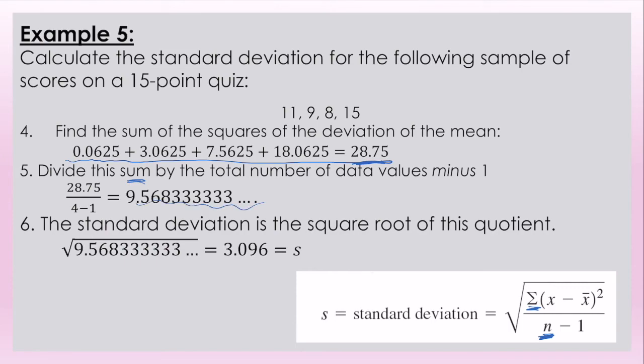Now, luckily for you and your graphing calculators, you'll keep this number so you can maintain your accuracy. So I take the square root of 9.568 and I get 3.096 is our standard deviation. So that's on average how far away a data value is from the mean.